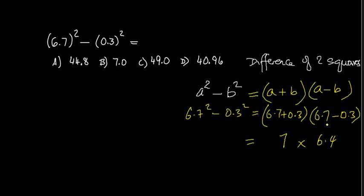So 6.4 multiply by 7. Let's look at it: 7 times 4 is 28, and 7 times 6 is 42, plus 2 is 44. This answer has 1 decimal place, well this quantity has 1 decimal place, this has 0 decimal places after the point.